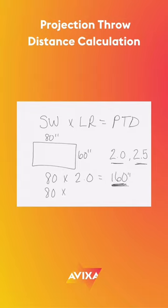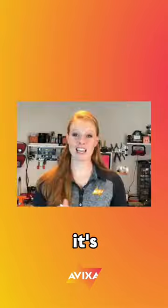For the second example, we're going to work out 80 inches wide times 2.5, which gives us 200 inches, so that means I can place the projector 200 inches away from the screen. It's really that simple.